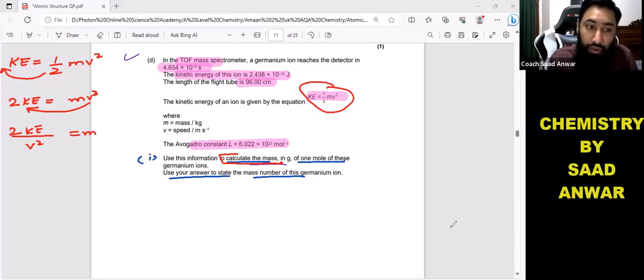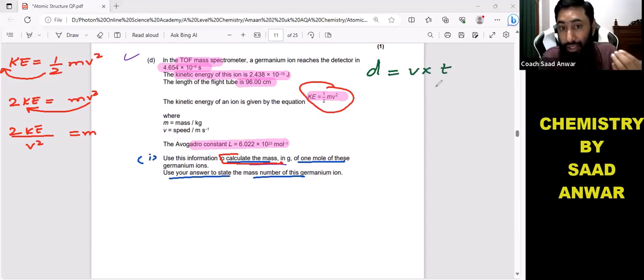The problem is v squared, velocity squared, is not given. But this is not the problem. We know this formula: distance equals velocity times time. This formula will help us to calculate velocity.